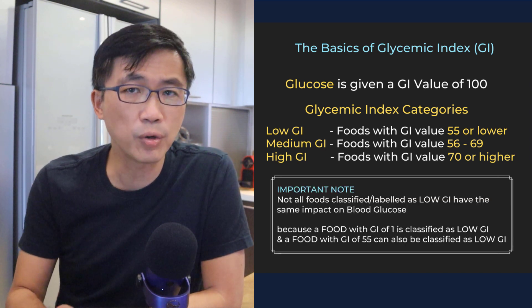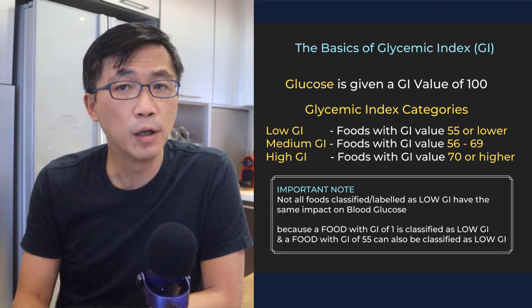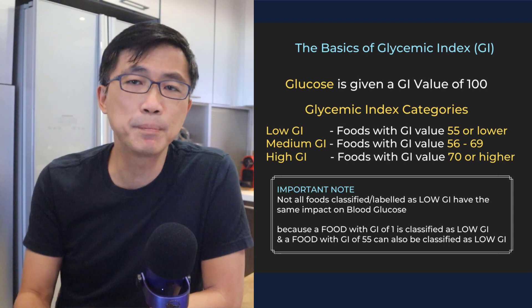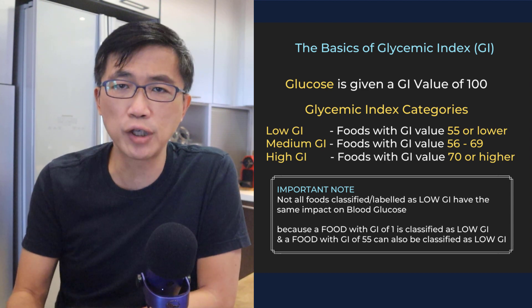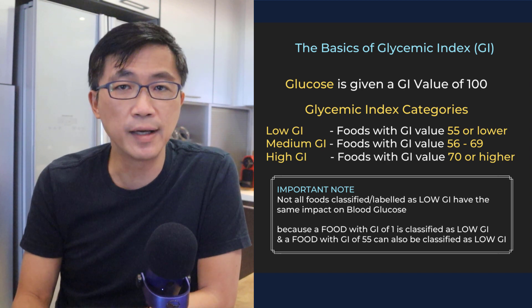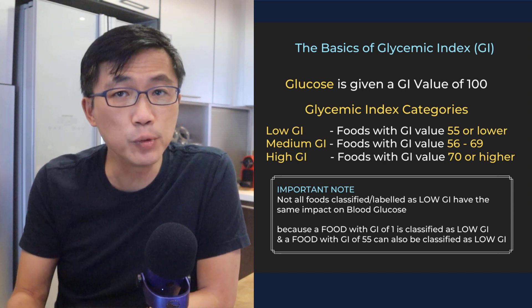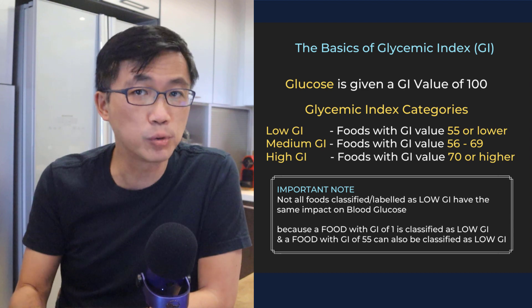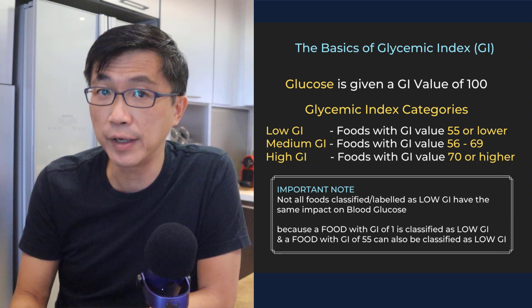It is important to note that not all foods classified as low GI have the same impact on blood glucose, because a food with a GI of 1 is classified as low GI, and a food with a GI of 55 also qualifies to be labelled as low GI. There are many important things to note when using Glycemic Index to guide food choices — I shall cover that in greater detail in another video in this series. But for now, let's go to number 2.